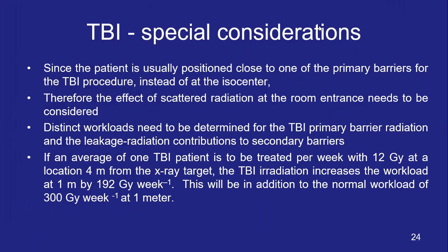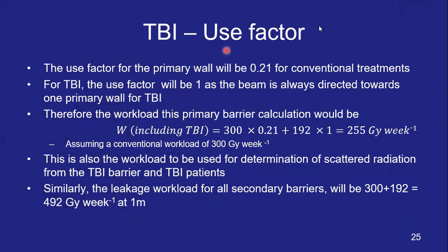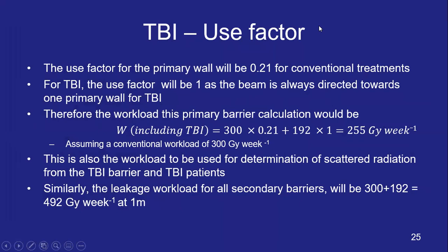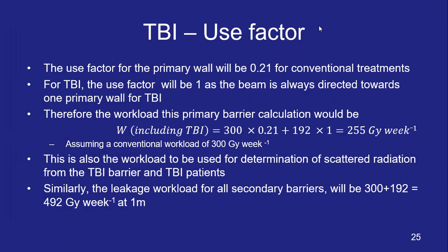The use factor for a primary wall in conventional treatment is 0.21, but for TBI the use factor is 1, as the beam is always directed toward one primary wall. The combined workload for the primary barrier is: conventional workload 300 × use factor 0.21, plus TBI workload 192 × use factor 1, totaling 255 gray per week. This is also the workload used for scattered radiation from the TBI barrier and TBI patients. For leakage radiation, all secondary barriers use the total workload of 300 + 192 = 492 gray per week at one meter.